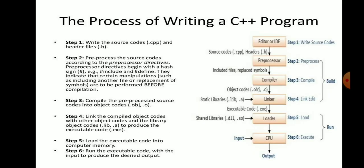The process of writing a C++ program involves: first, the editor — write source code saved with the .cpp extension, and header files saved with the .h extension. Second, the preprocessor processes source code according to preprocessor directives, which begin with a hash sign, such as #include or #define. Third, the compiler compiles the preprocessed source code into object code (.obj). Fourth, the linker links the compiled object codes with other object codes and library files. Fifth, the loader loads the executable code into computer memory. Sixth, run the executable code with input to produce the desired output.